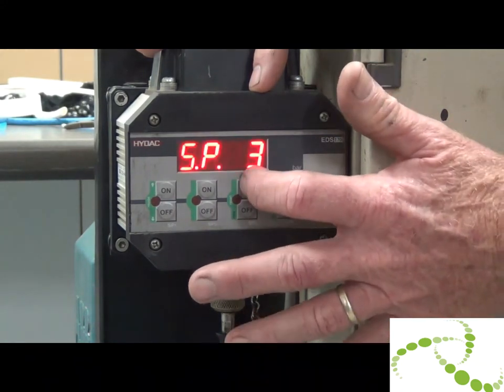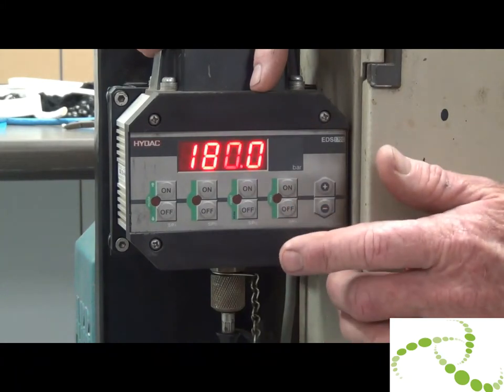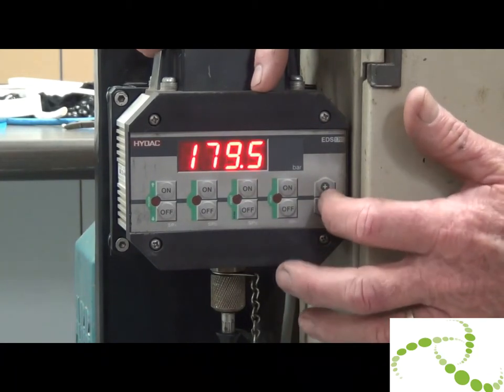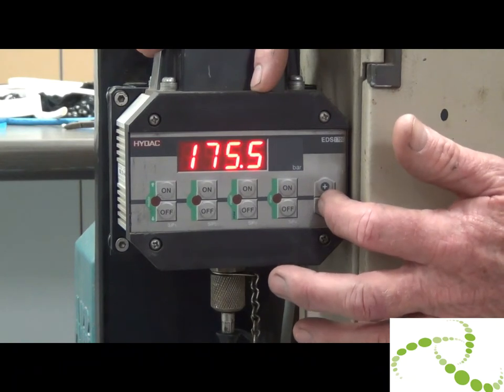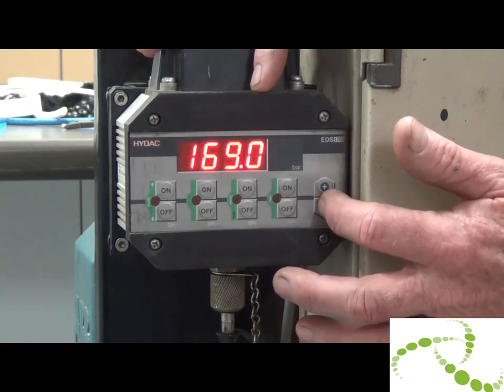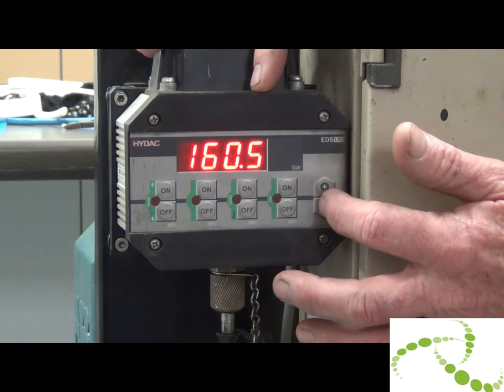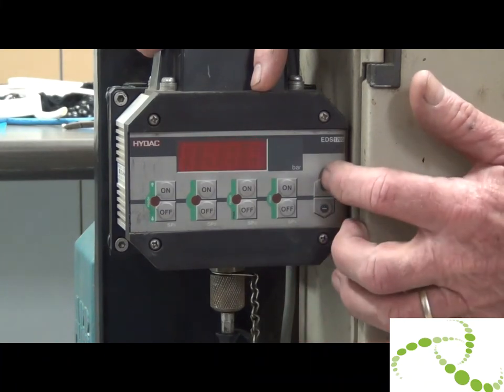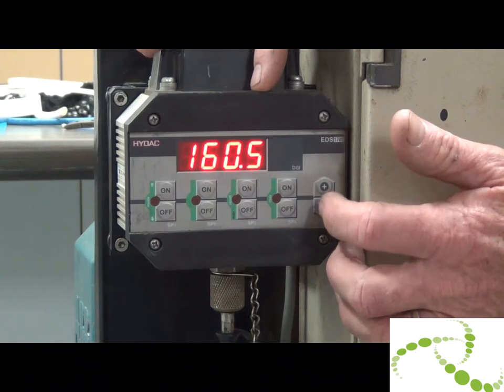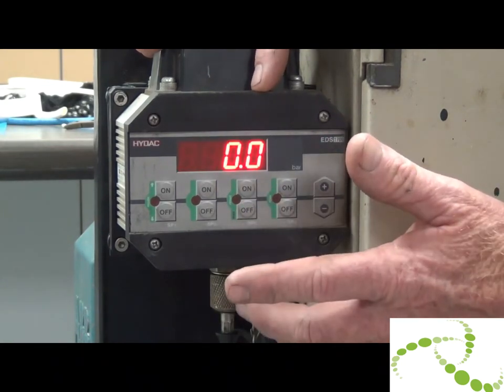The third one is your retract for both rivet setter number one and rivet setter number two. Now normally this is set to about 160 bar, which is more than good enough generally, but you can increase it if you are having problems. Wind that down using the minus, and if you want to increase it, use the plus arrow up. Then you press the F key. That sets it.